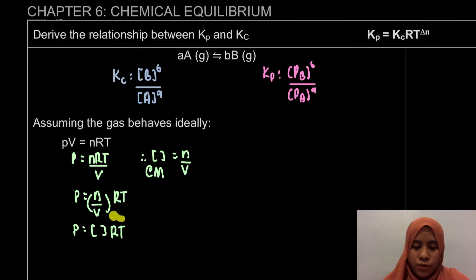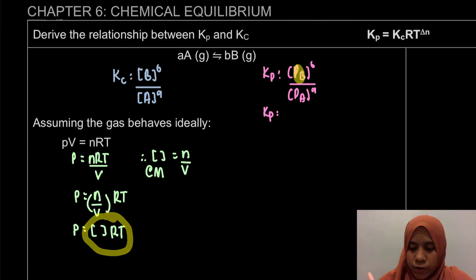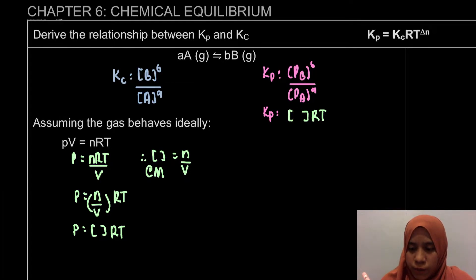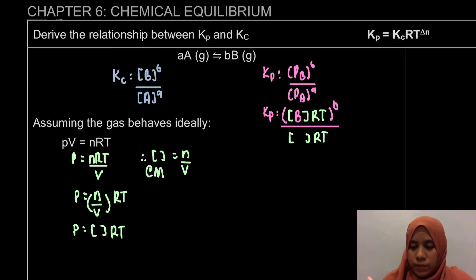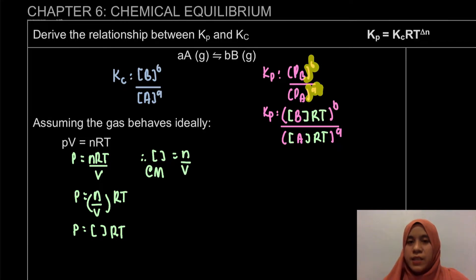So how do we substitute this into our Kp? For our Kp, pressure is equal to [concentration] times RT. So for species B, I write [B]RT, and don't forget it's to the power of b. Divided by the same for species A, which is [A]RT, to the power of a.